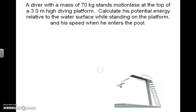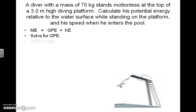The fourth problem: a diver with a mass of 70 kilograms stands motionlessly at the top of a three meter high diving platform. We need to calculate his potential energy relative to the water surface while standing on the platform and his speed when he enters the pool. Using the mechanical energy equation and substituting in the values, the gravitational potential energy on the platform is 2,058 joules.